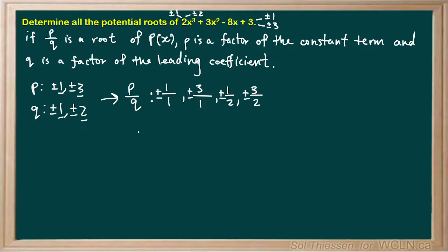Now, performing some simplification, our potential p/q values or potential roots are: ±1 (since 1/1 is just 1), ±3 (since 3/1 is just 3), ±1/2, and ±3/2.